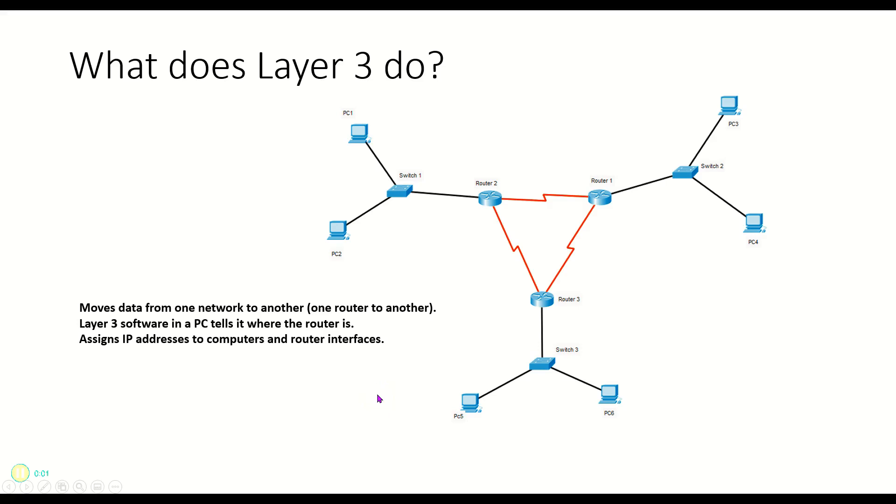What does Layer 3 do? Well, Layer 3 gets us from one network to another network. That's what it's all about - getting from anywhere on my network to anywhere on another network.